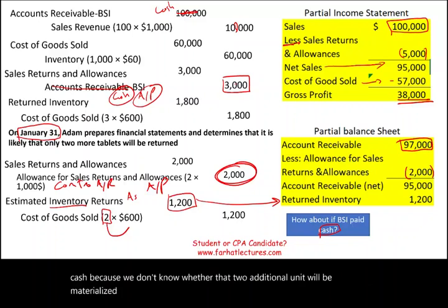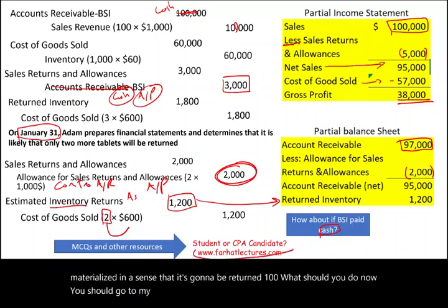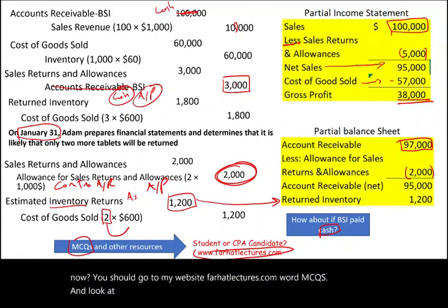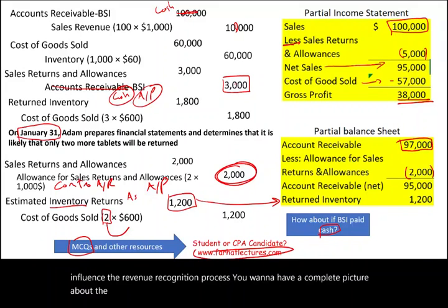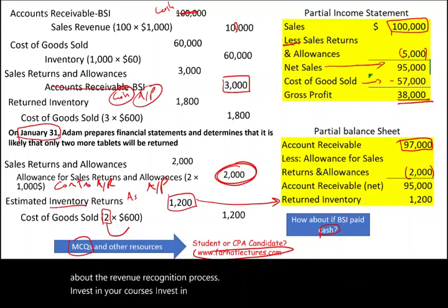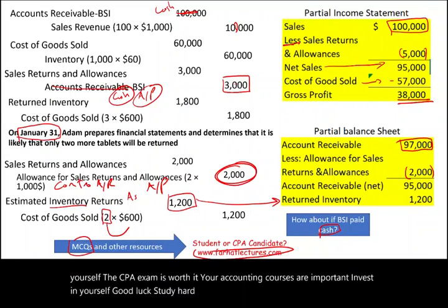You should go to farhatlectures.com and work multiple choice questions and look at additional resources. Sales returns and allowances is a topic that influences the revenue recognition process, and you want to have a complete picture about that process. Invest in your courses and your accounting career. The CPA exam is worth it. Good luck, study hard, and stay safe.